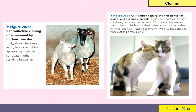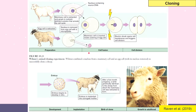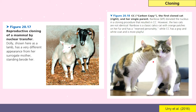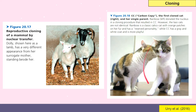Dolly's surrogate mother was that black-faced sheep, but Dolly was actually a clone of the one who donated the mammary cell. Another example of cloning is CC — Carbon Copy — the first cloned cat. Rainbow is the cat who donated the nucleus in the cloning procedure. They are not identical in appearance: Rainbow is a classic calico cat while CC has gray and white fur, but genetically CC is a result of cloning Rainbow.